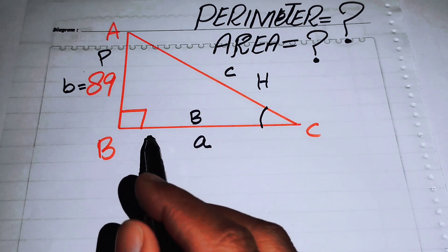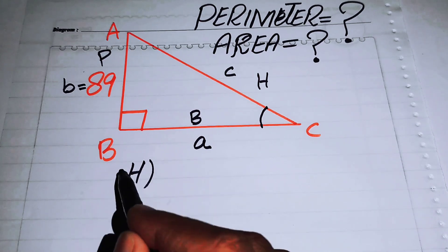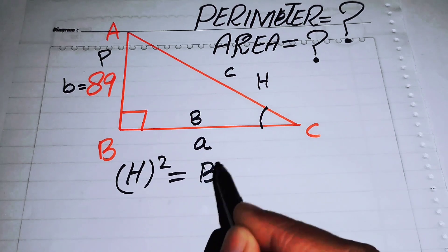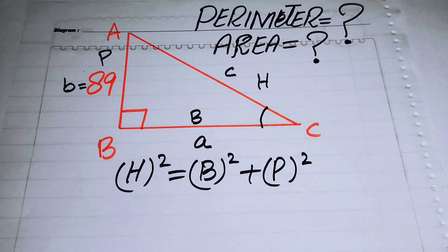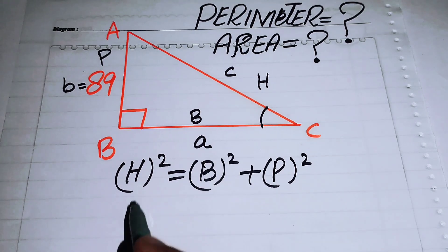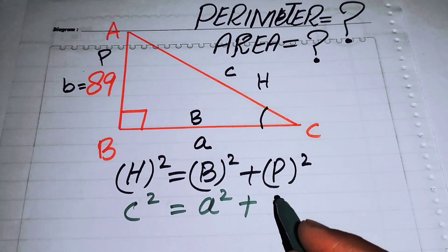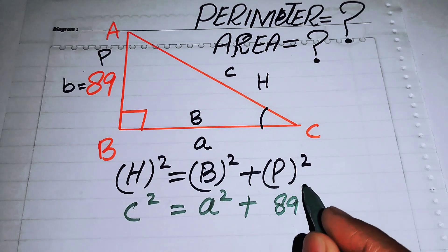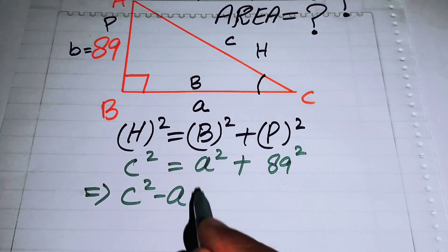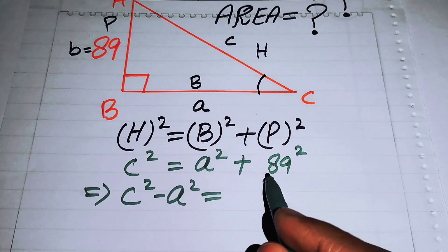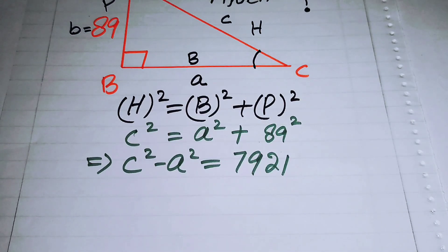Since this is a right triangle, we will use the Pythagorean theorem: hypotenuse squared equals base squared plus perpendicular squared. Here the hypotenuse is c, the base is a, and the perpendicular is 89. So we have c² - a² = 89² = 7921.